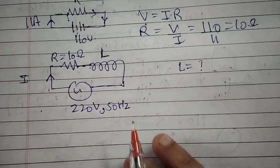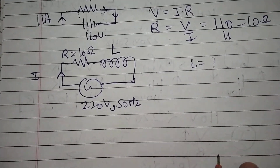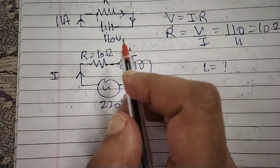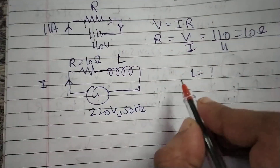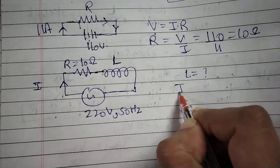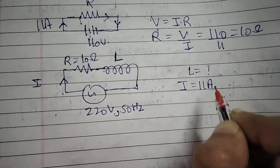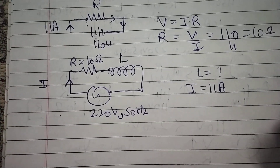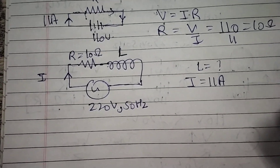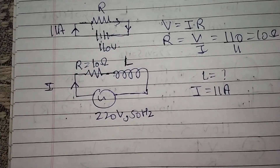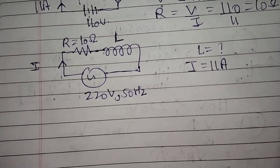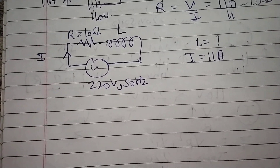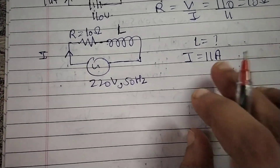Now in this question, the key point most students ask about is the current. The bulb current must remain 11 ampere. If we reduce the current, the bulb will become dim. If we increase it too much, the bulb gets more power and becomes brighter — but we must keep it at rated current.